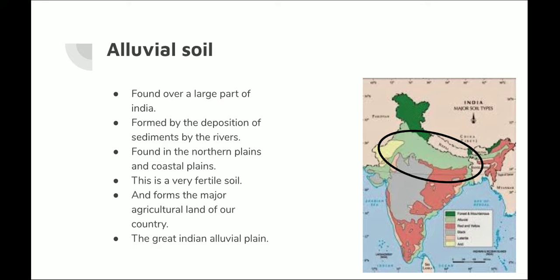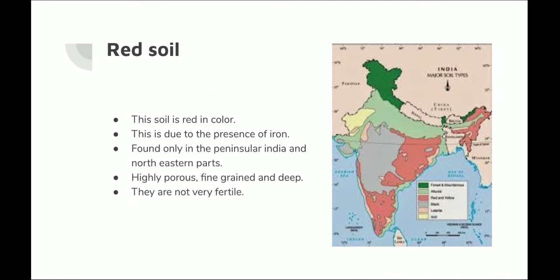Next is alluvial soil. Alluvial soil is also a very fertile soil and it is a transported soil, carried by rivers — mainly the rivers of the northern Indian plains like the Ganga and its tributaries — continuing till the delta region of West Bengal and the eastern part of India. You can see the light green colored portion circled on the map — that is where alluvial soil is present. It is formed by the deposition of sediments by rivers like the Ganga and Yamuna and found in the northern plains and coastal plains. It is mainly suited for agriculture.